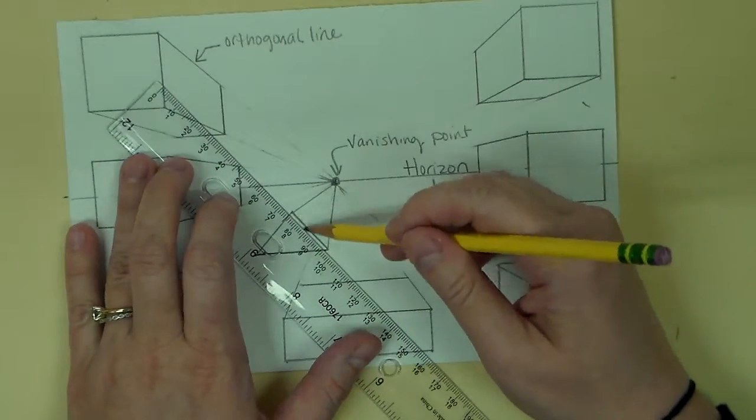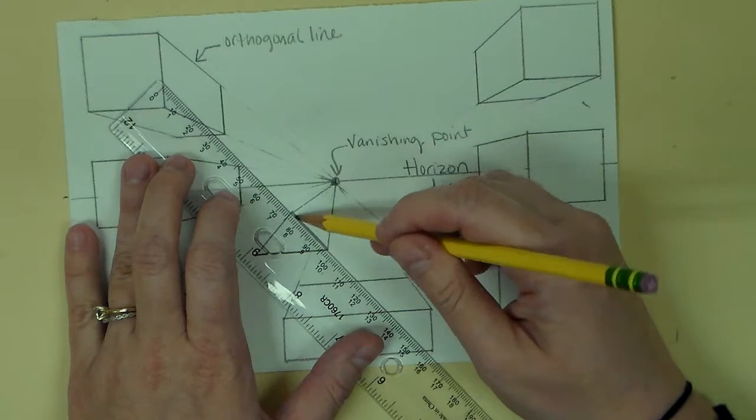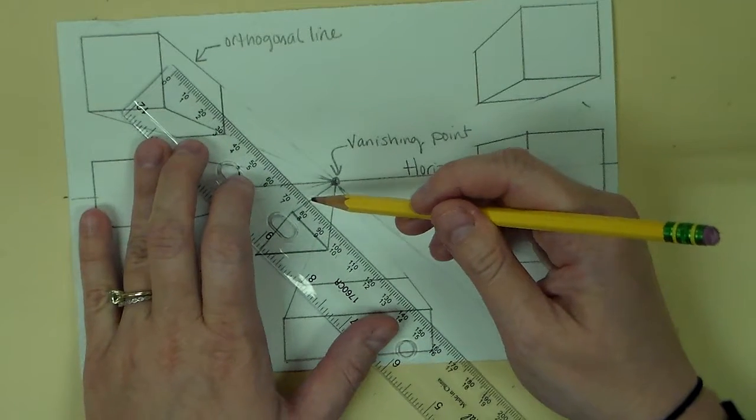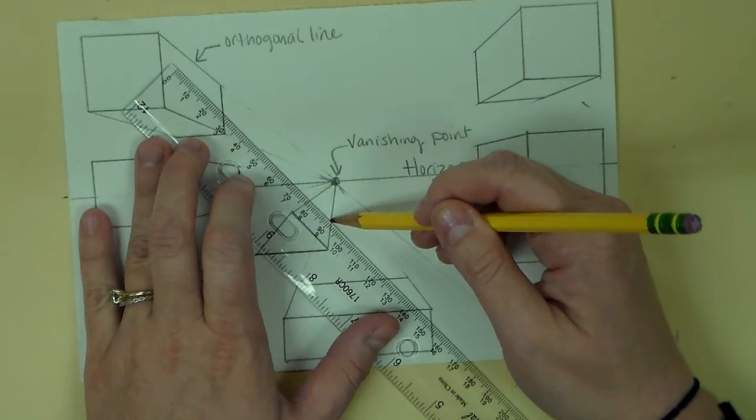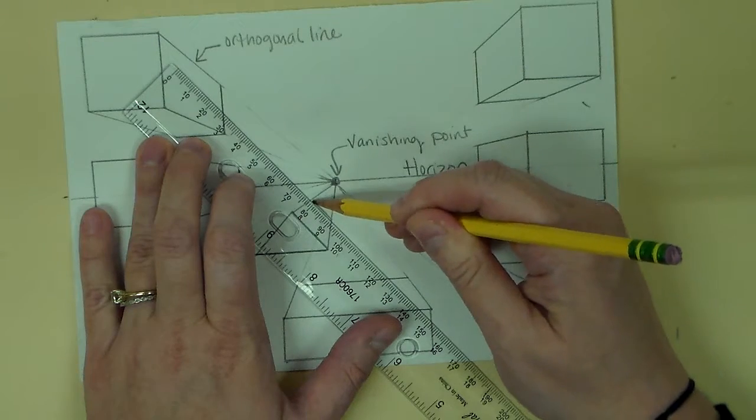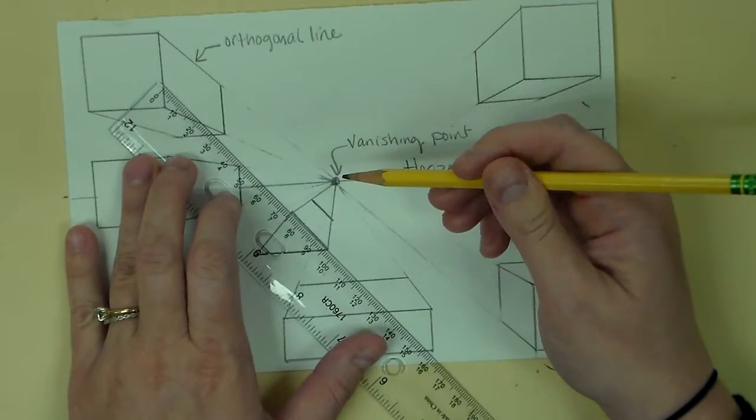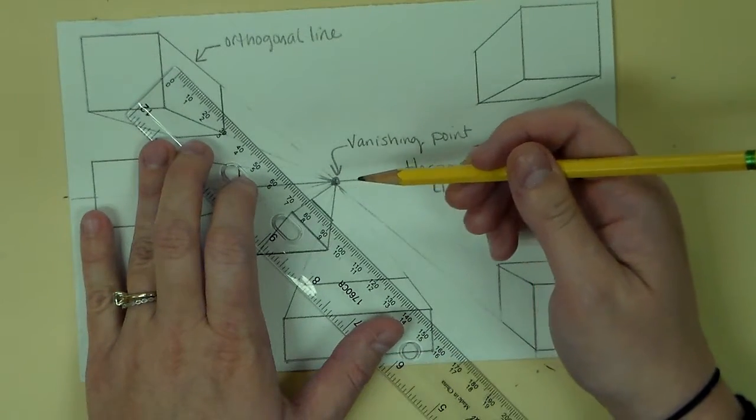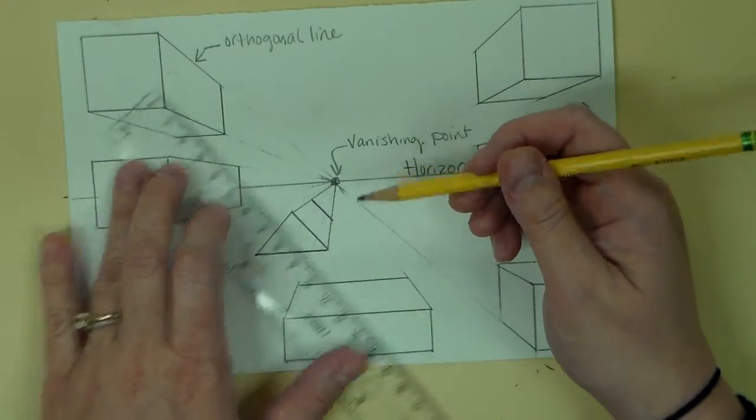So I'm gonna use that same angle as the triangle on that side and I'm gonna move that back as far as I want that to go. I'm gonna draw that line. So as I move my ruler back, I tried not to move it so that it falls in line with that shape.